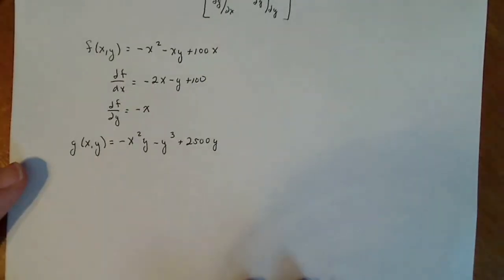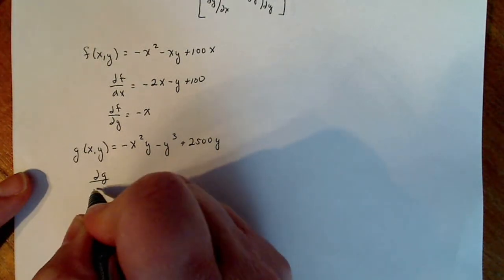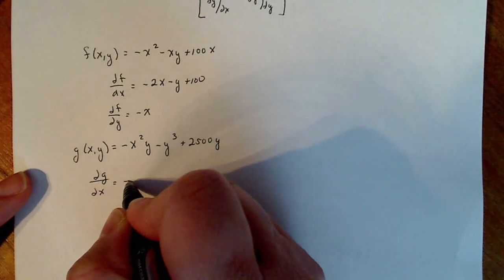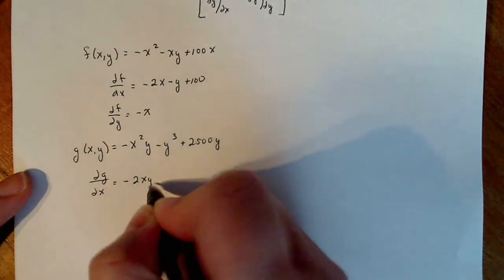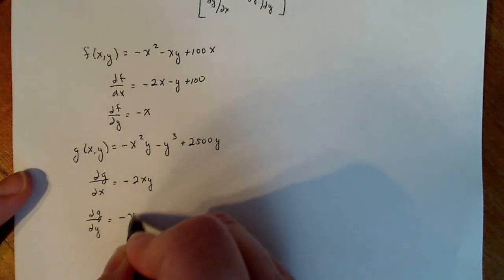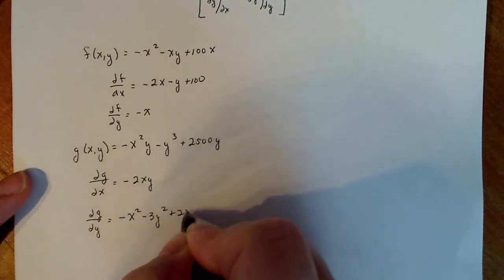Now for G of X, Y, my partial of G with respect to X is going to be minus 2XY. And then my partial of G with respect to Y is going to be turning out to be minus X squared minus 3Y squared plus 2,500.